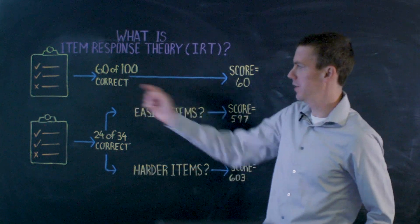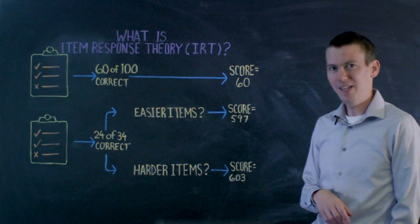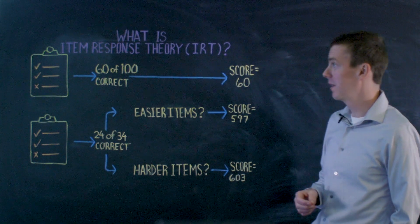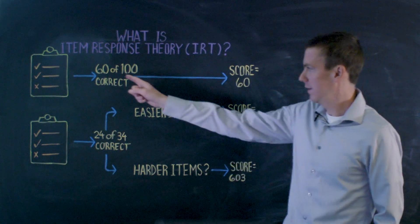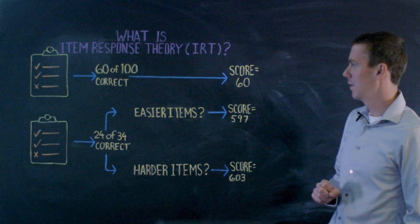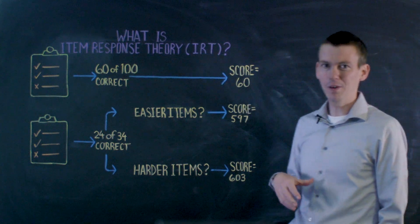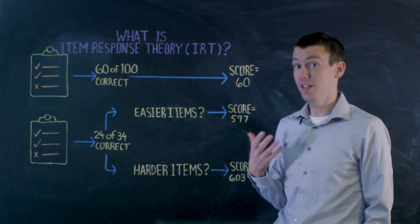First, we can think about a traditional test. This is probably the test that you're most familiar with. Typically, if they get 60 out of 100 correct, their score is going to be 60, no matter what questions they get right and what questions they get wrong.